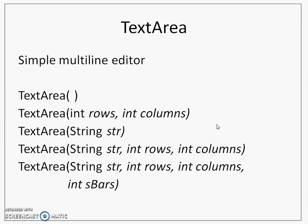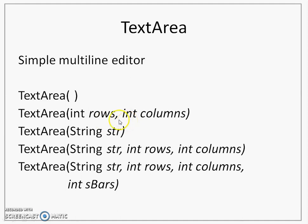Let's go on to the next text entry component, which is text area. Text area is a multi-line editor — that is the difference between a text field and text area. Text field allows single-line entry and editing, whereas text area allows multi-line editing. The default constructor creates a text area. The second constructor takes number of rows and number of columns as parameters — number of rows decides how many lines will be displayed, and number of columns decides how many characters will be displayed per line. This is in the visible area; you can still enter more rows and columns, which you can see using scroll bars.